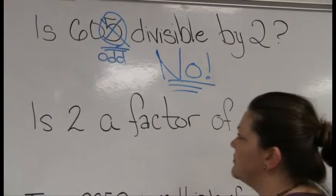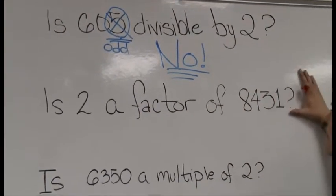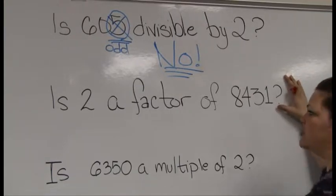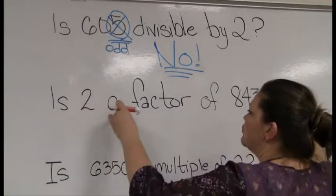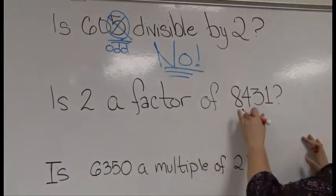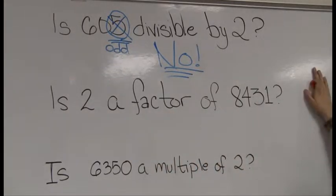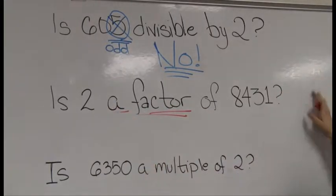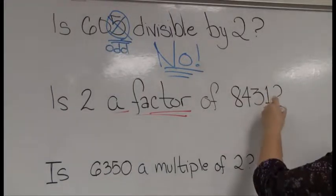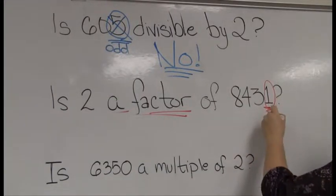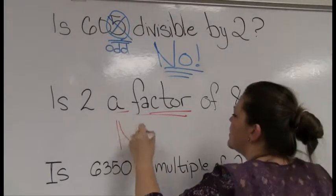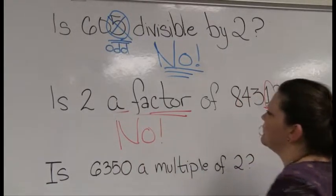The next two problems just change the language to see if it trips you up. I could ask: is 2 a factor of 8,431? If it's a factor, it divides perfectly — same question. Examining this number, I look at its final digit: there's a 1, which is odd. My answer is no — I'm looking for evens.